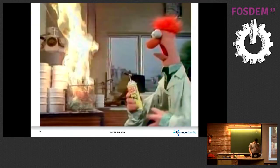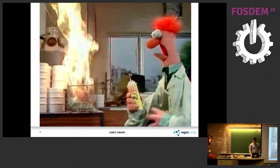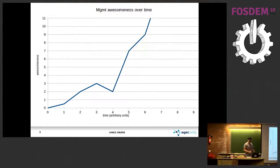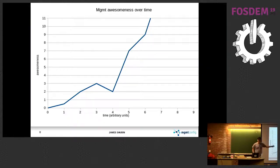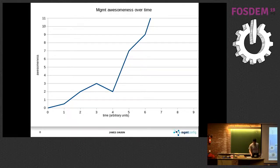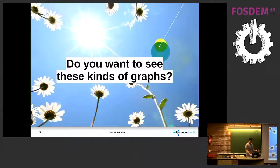Some background. Everything in the config management space was pretty horrible, so I was looking at better solutions. This is the graph of MGMT awesomeness over time. I had a little hard point in my life, but otherwise — up and to the right. Is this the kind of graphs you want to see? This is all about spreadsheet feeds and graphs. Are these the kind of graphs you want to see?